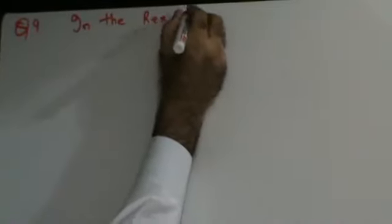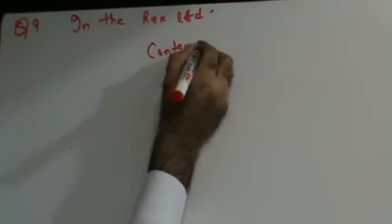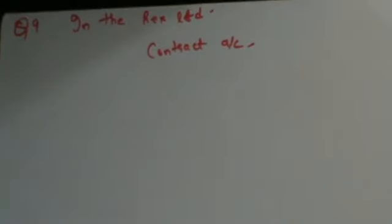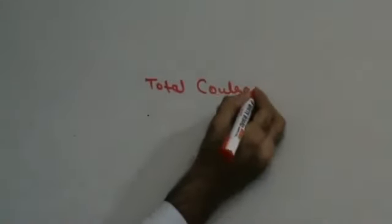We are doing question number 9 in the books of Rex Limited. Since they have given you estimated contract, you will have to make a contract account and total contract account. Now they are saying that Rex Limited commenced business on 1st July 2003. The total contract price is 5 lakhs but Rex Limited accepted the same for 4,50,000. It was decided to estimate total profit and to take credit of profit or loss account to that proportion of estimated profit as cash basis which the work completed and certified both to the total contract. Let's start.